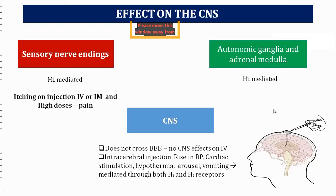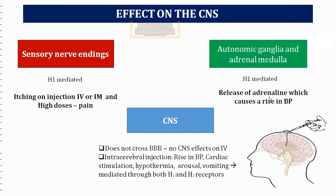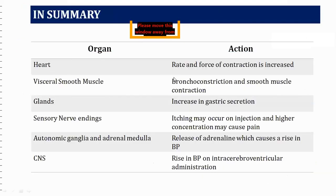At autonomic ganglia and adrenal medulla, histamine acts via H1 receptors, causing activation and release of adrenaline. This adrenaline release leads to a rise in blood pressure due to increased heart rate. These cover all seven organ sites on which histamine has pharmacological action.